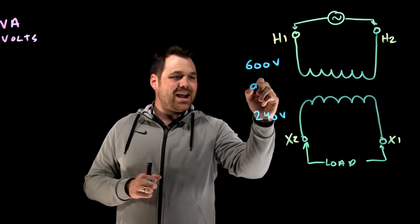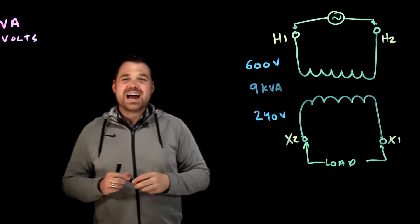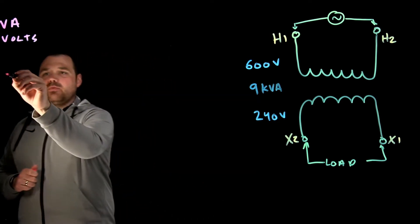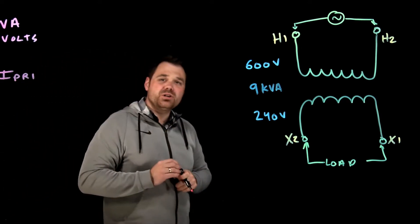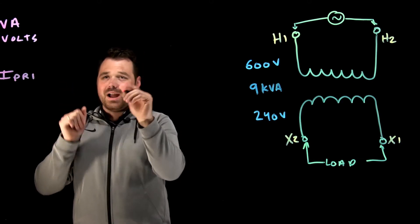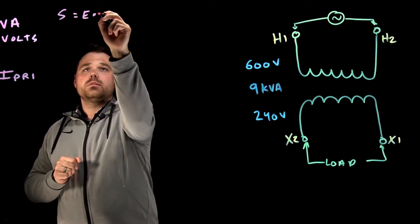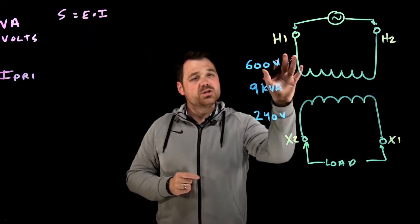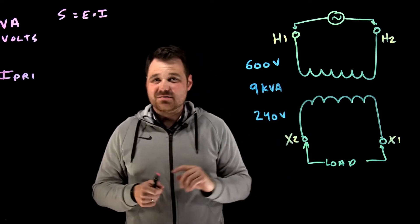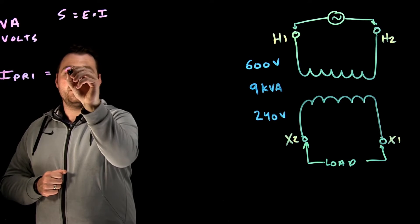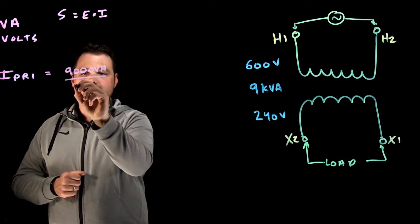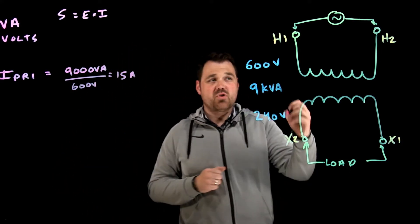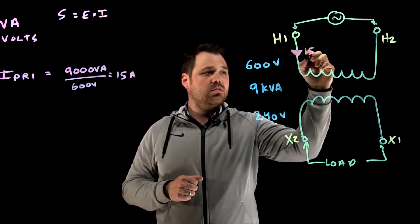For this transformer, let's say it is a 9 kVA transformer or 9,000 volt amps. I want to calculate current. Let's start with the primary. I'm going to take my apparent power formula. We know that S equals E times I. I'm going to transpose it. So I'm going to take my apparent power divided by my voltage. On my primary side, I've got 600 volts and 9,000 VA. So 9,000 VA divided by 600 volts gives me 15 amps. My primary current is 15 amps.